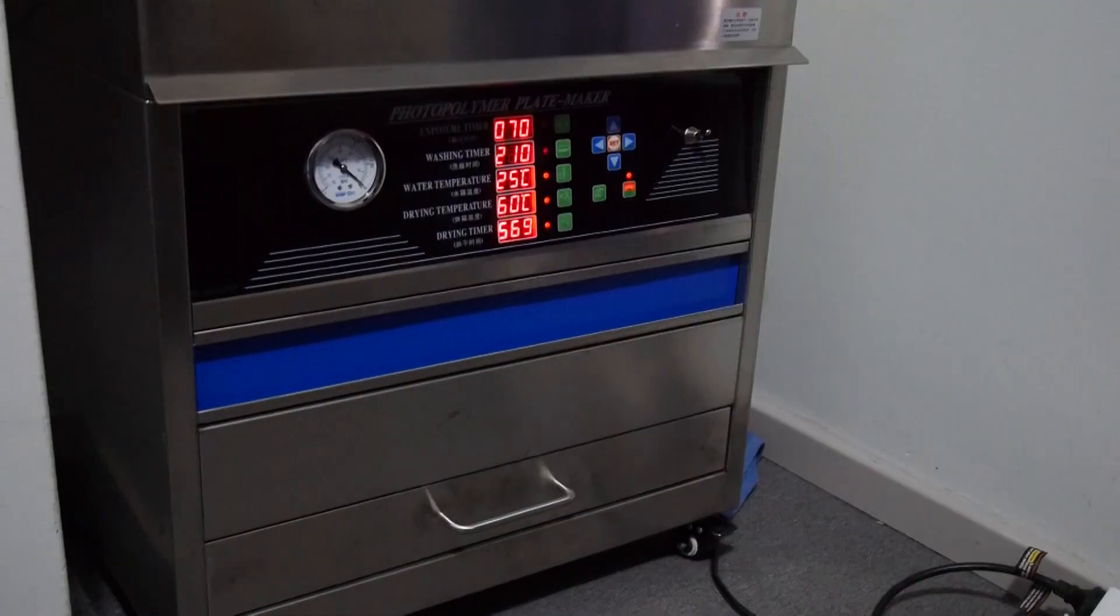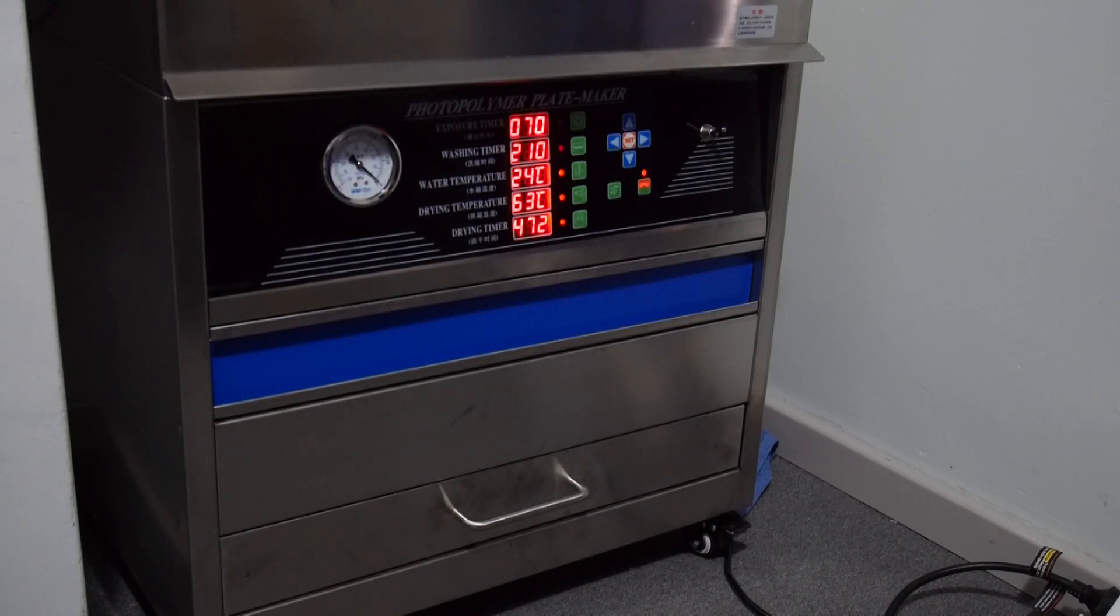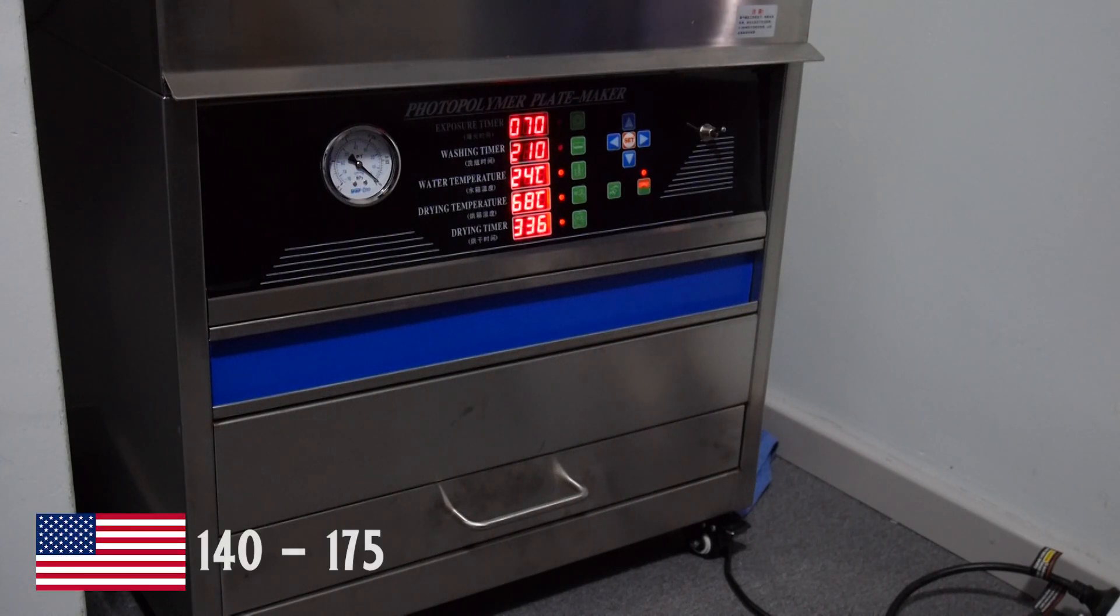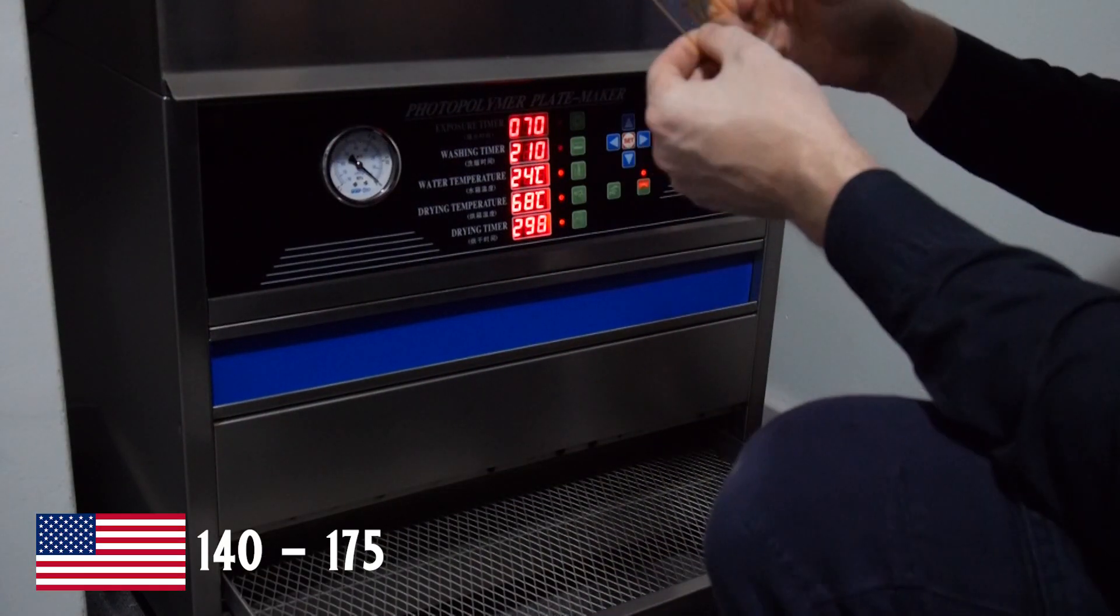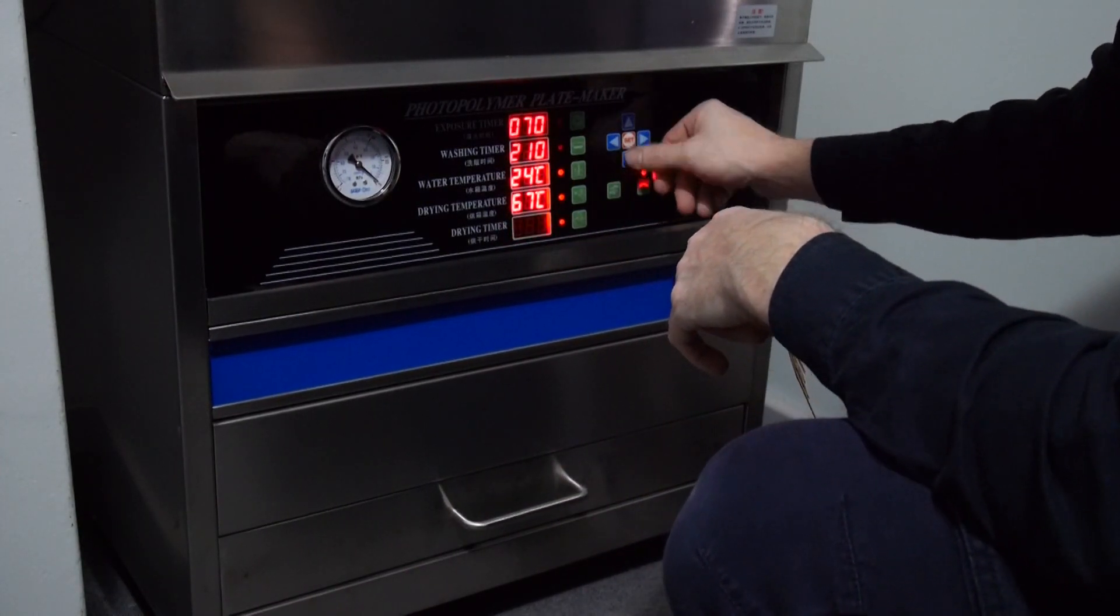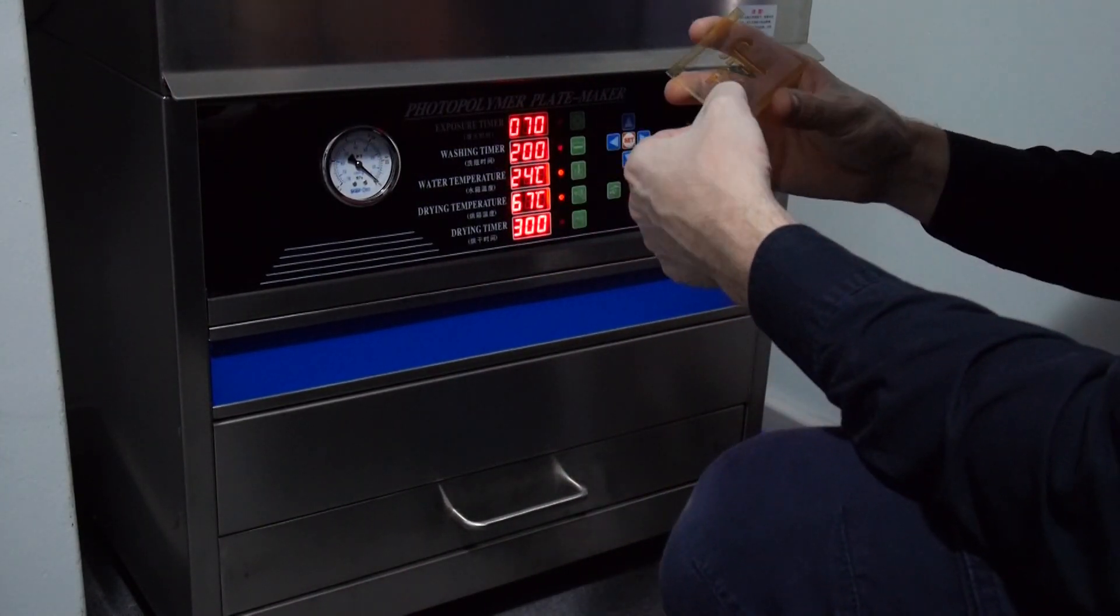Compared to all the rest of the calibrations, calibrating the drying time is easy. All you have to do is stick the washed out plate into the drying unit. You'll need to set it somewhere between 60 and 80 degrees celsius and then check every minute until it is dry. You must make sure there is no moisture left on the plate as this will affect the final hardening process.